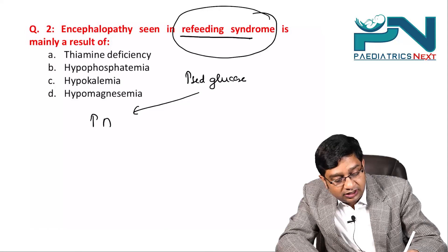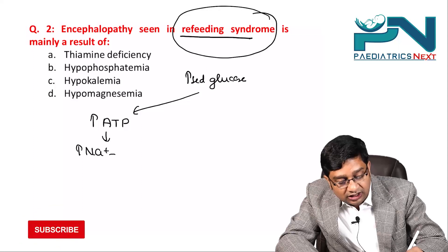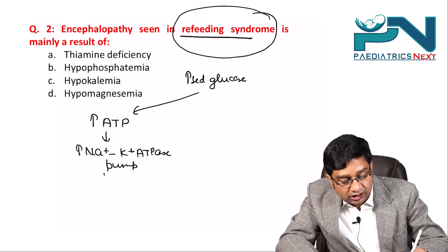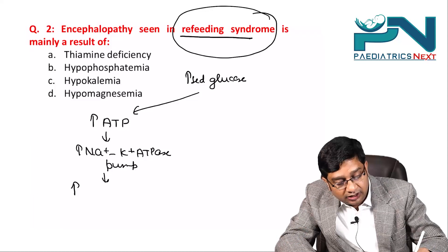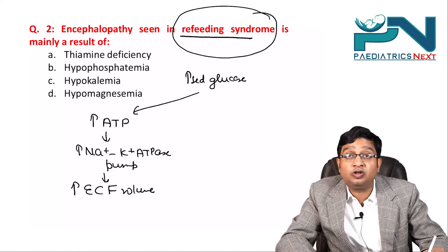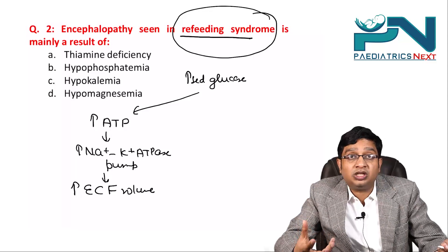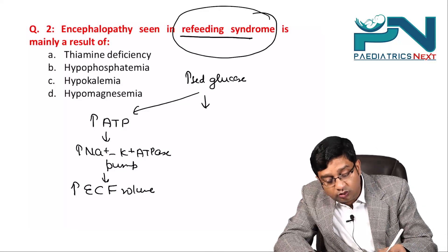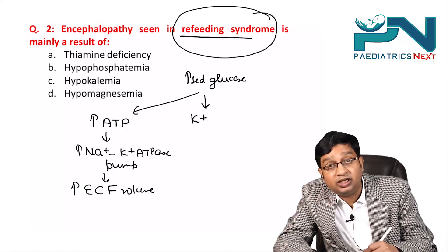Due to increased glucose, there will be increased ATP, and due to increased ATP there will be increased activity of the sodium-potassium ATPase pump. More sodium is pumped out of the cell, leading to an increase in extracellular fluid volume, which is responsible for breathlessness and enlargement of the liver seen in refeeding syndrome.